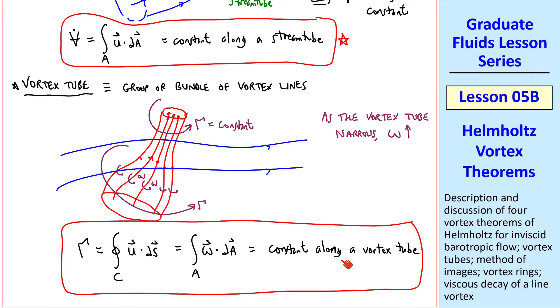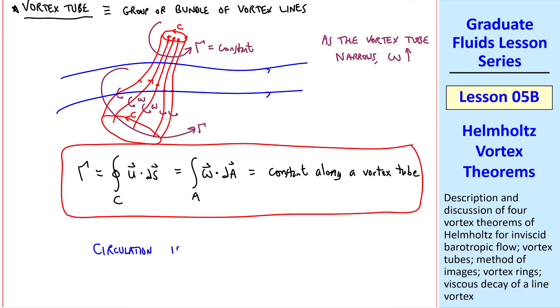Hopefully, you can see the direct analogy between this equation and this equation. Physically, as the area gets smaller, we have less area for this integral, and in order for circulation to stay constant, omega must increase. In this case, our closed contour C would encircle this area here, and then later this area here. Therefore, circulation is constant along a vortex tube. This is Helmholtz's second theorem.